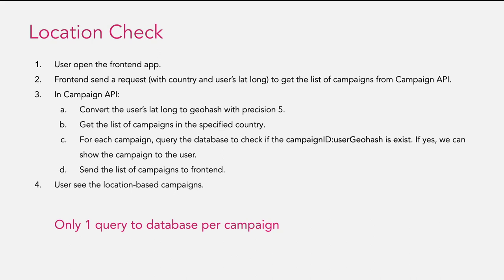Now let's talk about the use case from the consumer side. The user opens the frontend app and the frontend sends a request with the country and the user's lat/long to get the list of campaigns from the campaigns API. In the campaign API, we convert the user's lat/long to a Geohash with precision 5, get the list of campaigns for the specified country, and for each campaign we query the database to check if the map of campaign ID and user Geohash exists. If yes, we can show the campaign to the user, then send the list of location-based campaigns to the frontend.